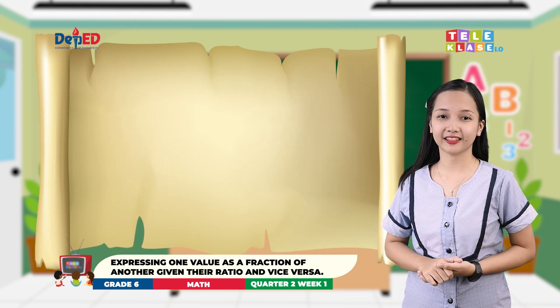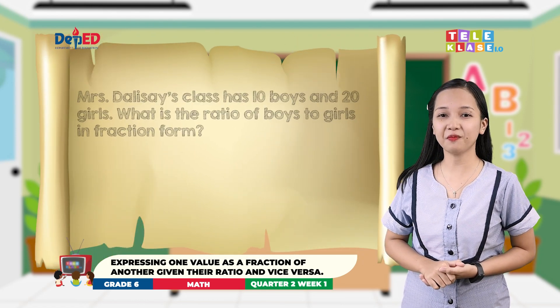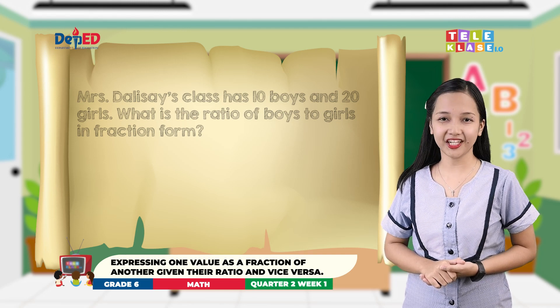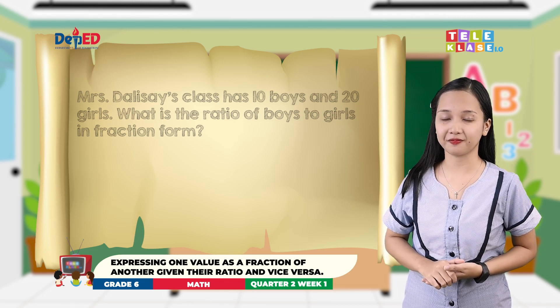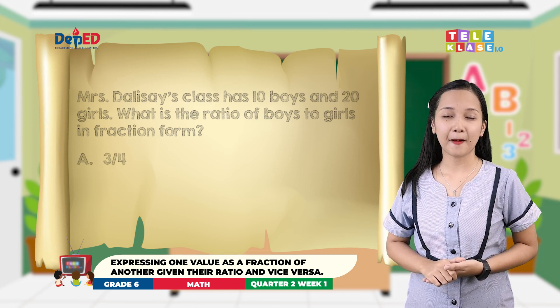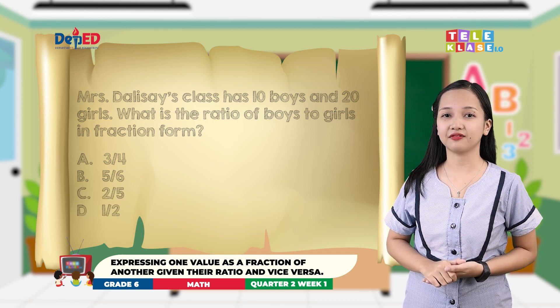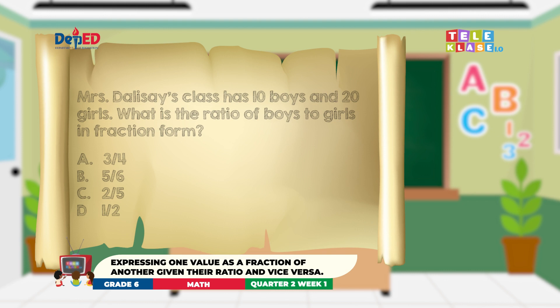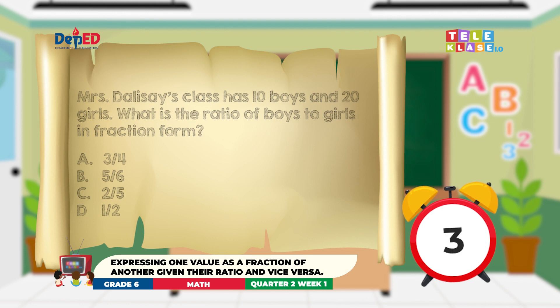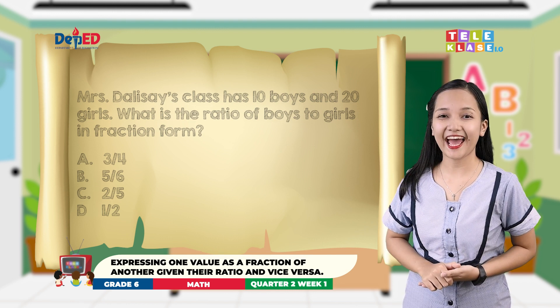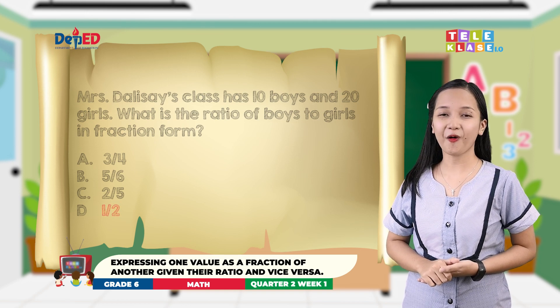Box 5 question: Mrs. Dalisa's class has 10 boys and 20 girls. What is the ratio of boys to girls in fraction form? A: 3 fourths. B: 5 sixths. C: 2 fifths. D: 1 half. The answer is 10 over 20, or 1 half.